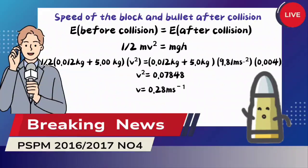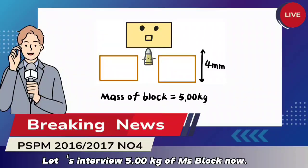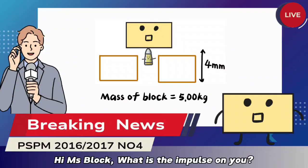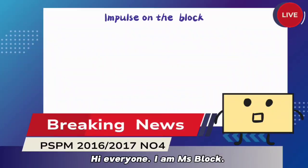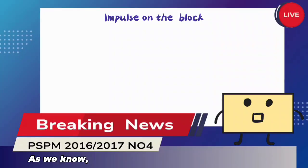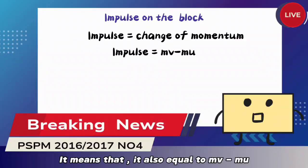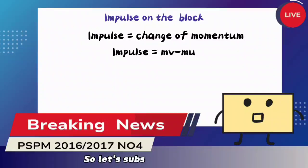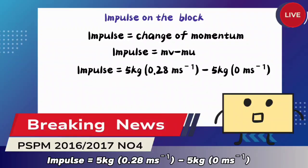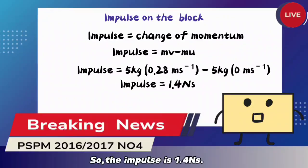Thanks Macebullet. Let's interview 5kg Maceblock now. Hi Maceblock, what is the impulse on you? Hi everyone. As we know, impulse equals change of momentum, which means it is also equal to Mv minus Mu. So let's substitute the values: impulse equals 5kg times 0.28 m/s. The impulse is 1.4 N·s.